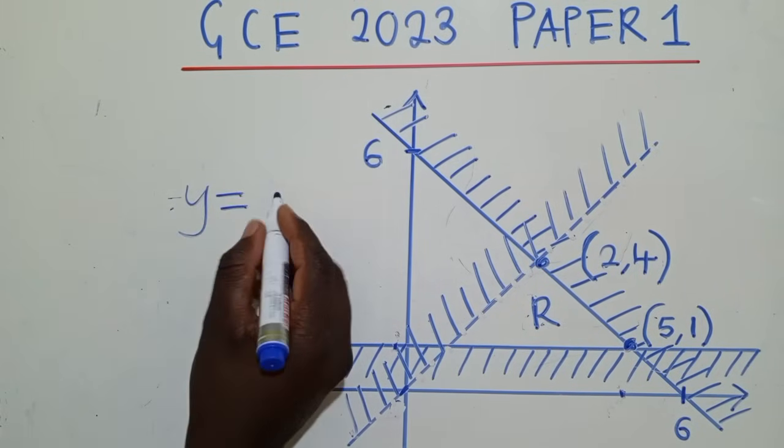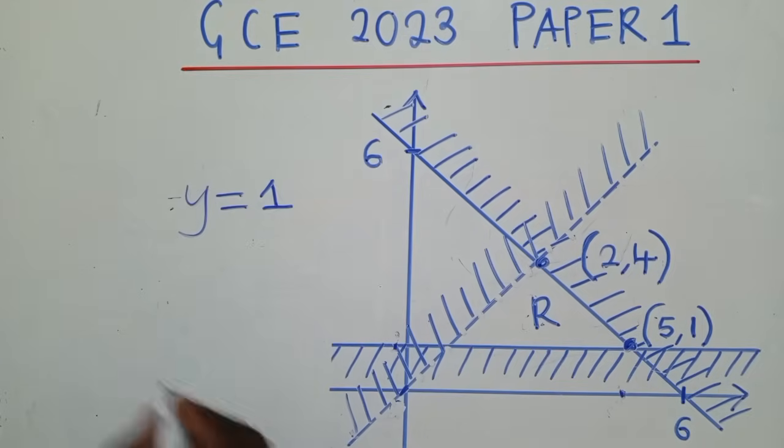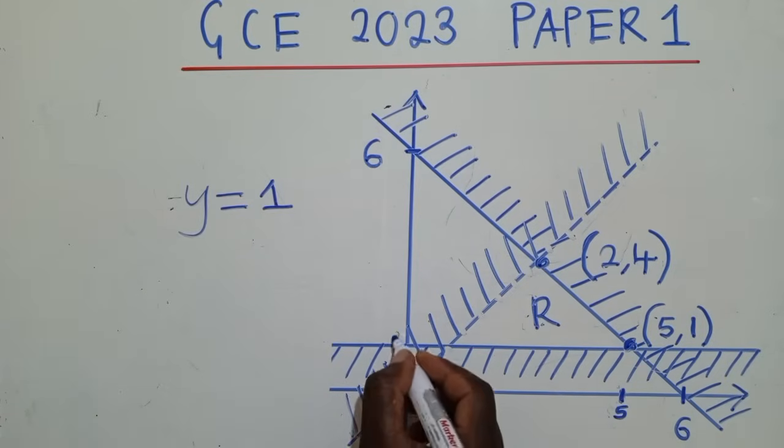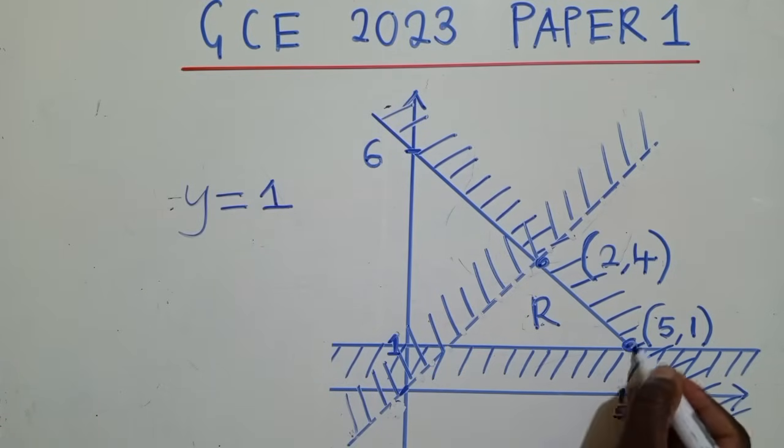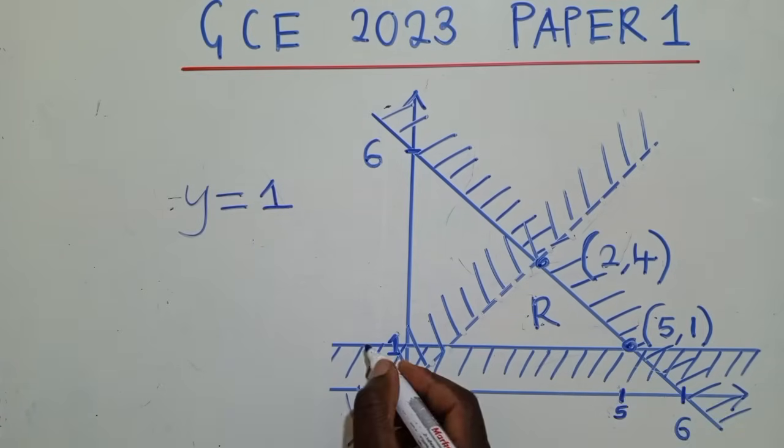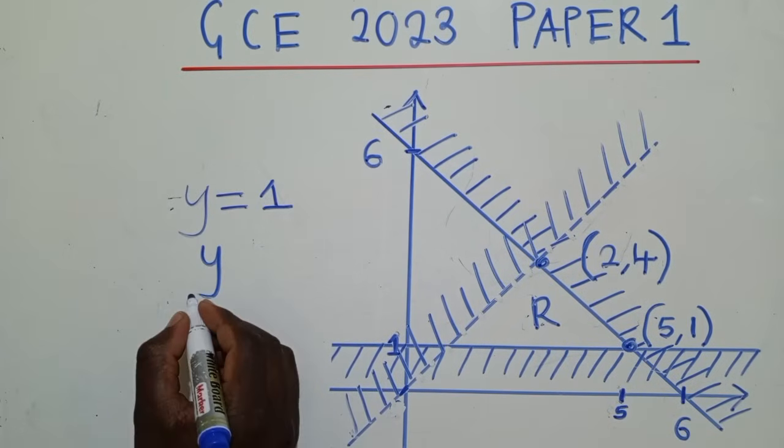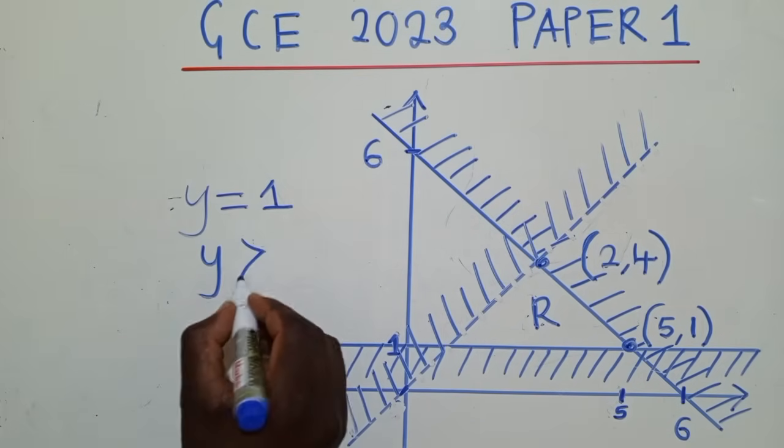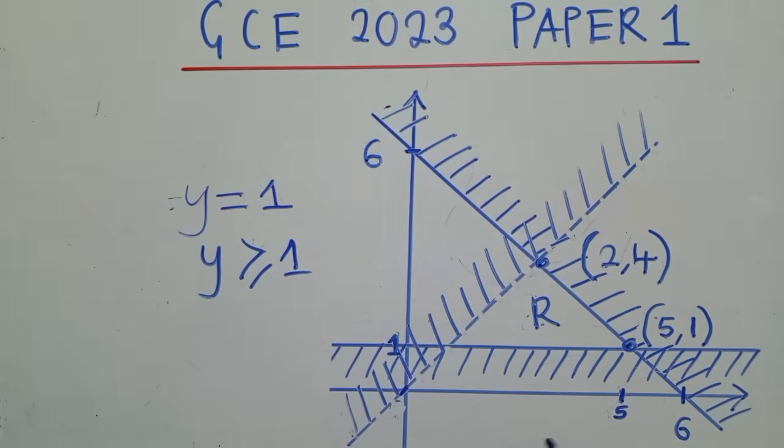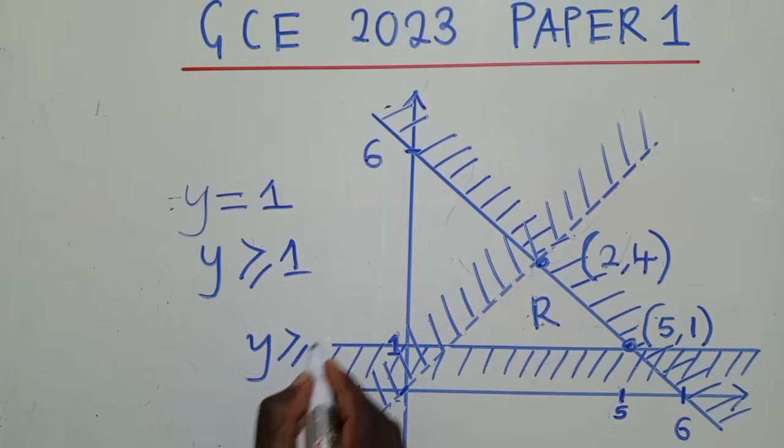So you say y is equal to 1. So how did I get to know that this is y is equal to 1? It's because of where it's passing. You can see over here, the coordinates, here it's 5, 1. You can see we're just given this point. And this is 5, 1. So after that, you see y is greater or equal to 1. So this is an inequality which is over here. y is greater or equal to 1.